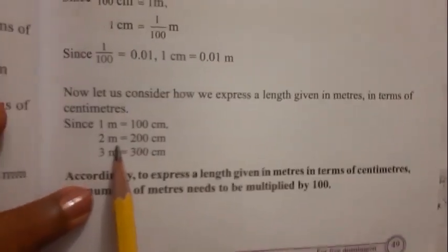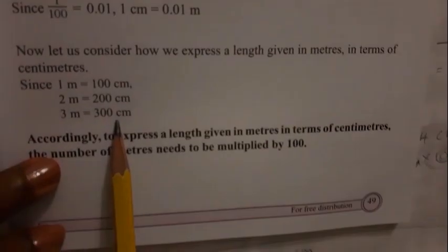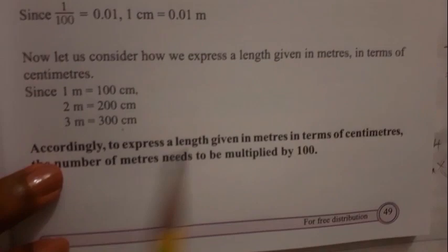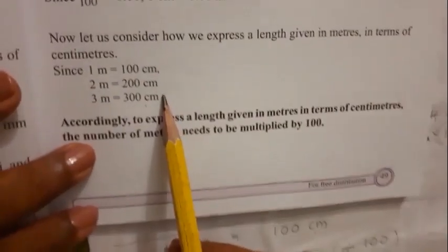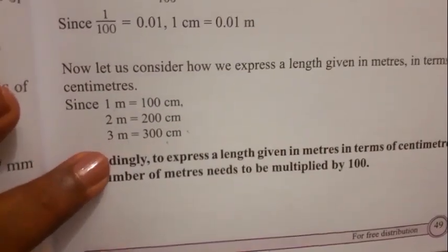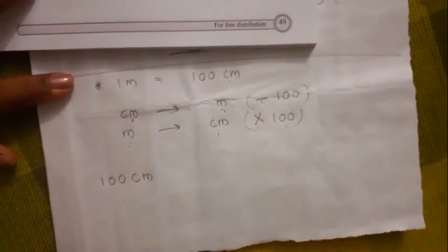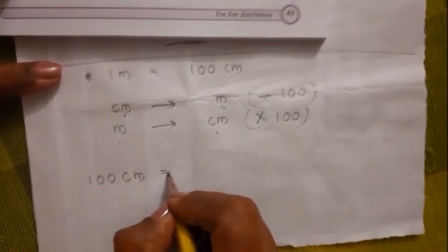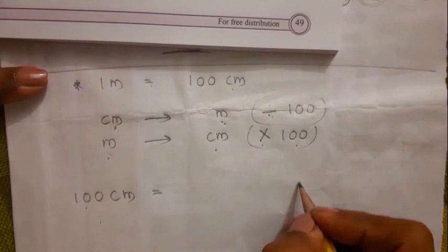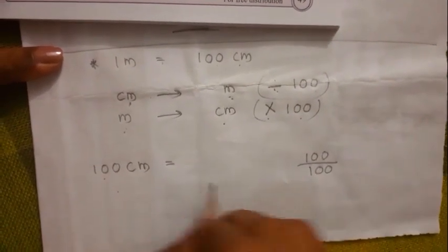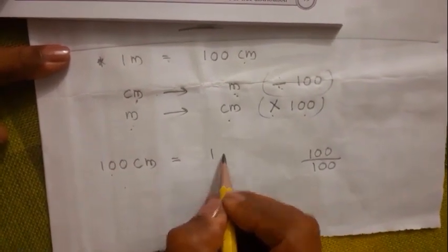1 meter equals 100 centimeters. 2 meters equals 200 centimeters. 3 meters equals 300 centimeters. If you take 100 centimeters and want to convert into meters, you divide by 100 — 100 divided by 100 — and you get 1 meter.